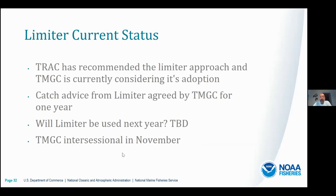So where are we currently? The TRACK has recommended the limiter approach and the TMGC is currently considering its adoption. The catch advice from the limiter — 200 metric tons — was agreed through negotiations by the TMGC for 2022 as the joint US-Canada quota. Whether the limiter will be used next year is to be determined, and there is a TMGC intersessional in early November where I'll be having further discussions with TMGC members about pros and cons and whether to continue with this approach.